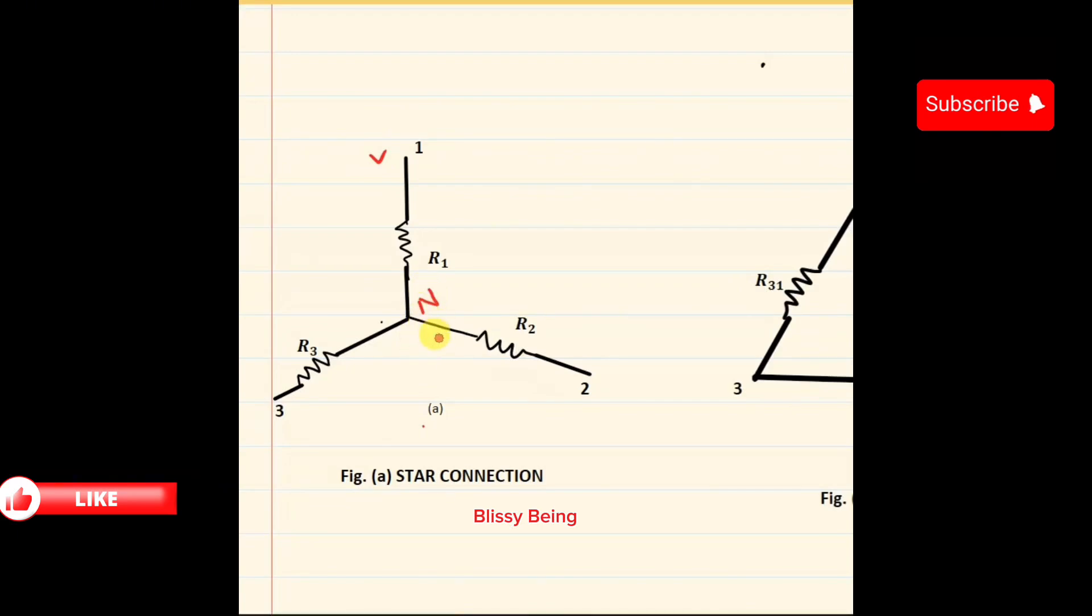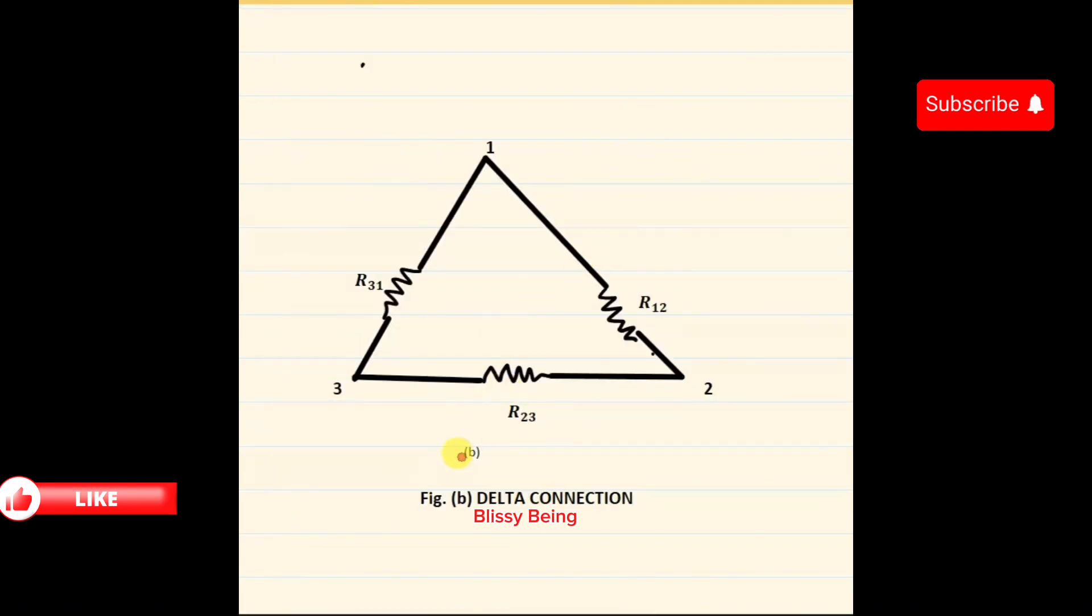This arrangement allows us to analyze the circuits effectively. Now understanding the delta configuration, we move to the delta configuration as shown in figure B. Here, resistors between terminal 1 and 2 are named as R12.